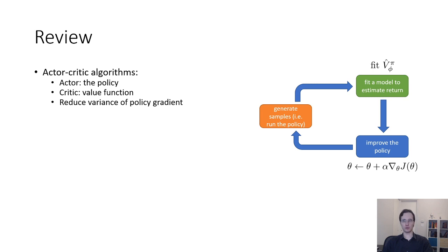The actor-critic algorithm can be viewed as a version of policy gradient with substantially reduced variance. And like the policy gradient and all other RL algorithms, it consists of three parts: the orange box where we generate samples, the green box where we estimate our return,